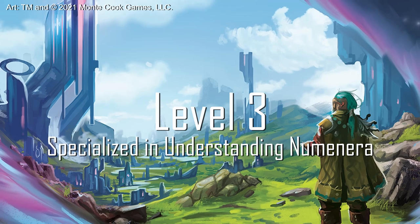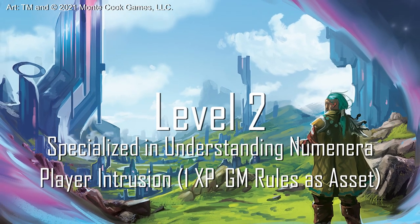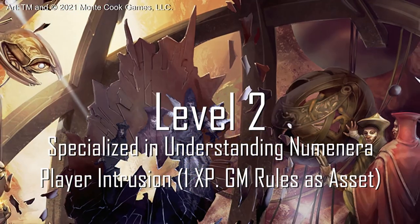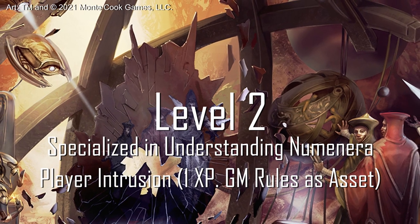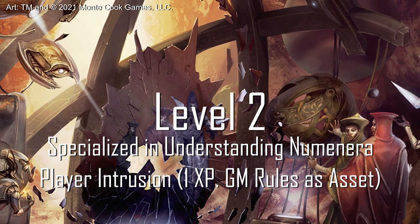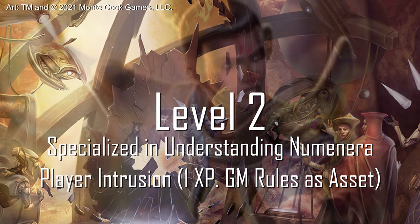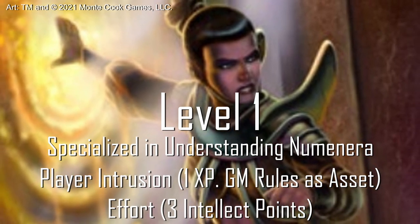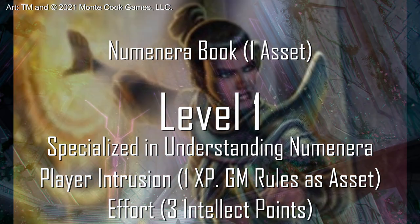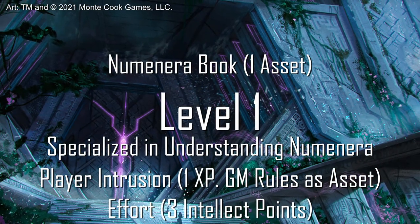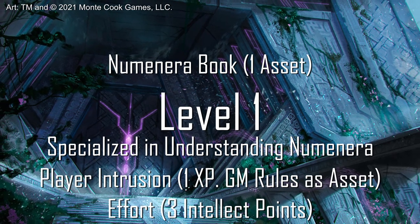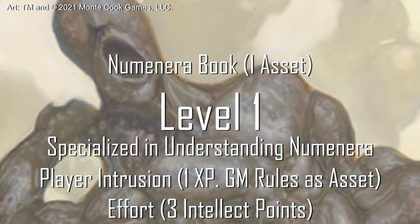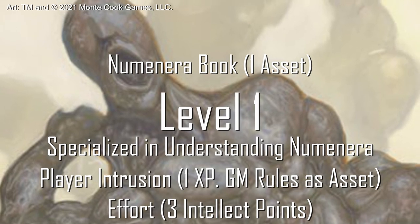The player activates a player intrusion, spending a point of XP she has, and tells the GM that in her past she was trained by a nanomaster who gave her some guidance on manipulating portal entries just like this. The GM accepts this and says that this background will give her an additional asset, bringing the difficulty down to level 2. She can put in a level of effort as well, bringing it down to level 1. Success is not guaranteed, but she can also use a book she has on the Numenera as an asset. The GM tells her, however, that this will take at least 10 minutes, if not more, to flip through the pages to find something helpful. The hostile intelligence's minions are pounding at the door. They could break through at any moment, and there are far too many for her to hold off with just an esoteric or two. She has to make a choice.